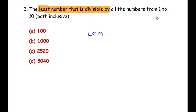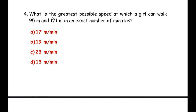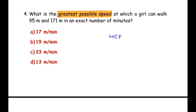We have to find the LCM of all numbers from 1 to 10 in that question. Now the fourth question: What is the greatest possible speed at which a girl can walk 95 meters and 171 meters in an exact number of minutes? You can pause the video and try to find out whether to use LCM or HCF. The keyword is again 'greatest possible speed,' so we have to find the HCF of 95 and 171. This question is very similar to the previous one.